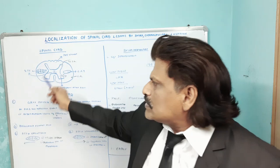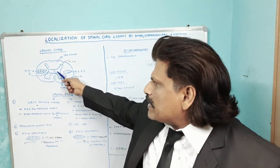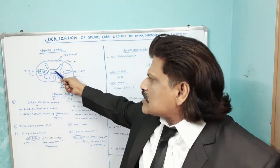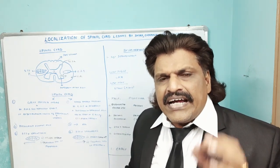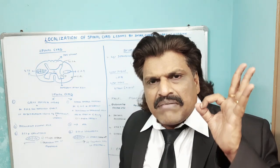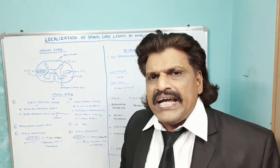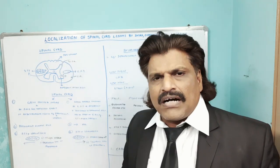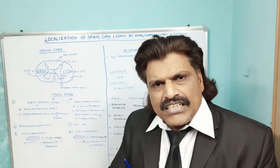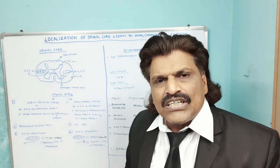The second concept is the spinothalamic tract, which carries pain and temperature sensations, and traverses the center of the spinal cord. Since intramedullary lesions affect the gray matter first, and the spinothalamic tract traverses the gray matter, it is predominantly involved in intramedullary lesions. Pain and temperature are affected, but sensations carried by the posterior column — touch, position, joint sense, vibrations — are spared. This is known as dissociated sensory loss.